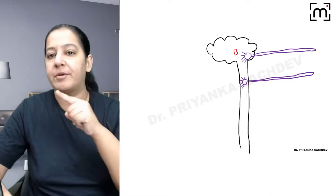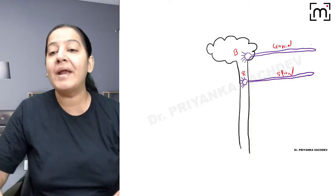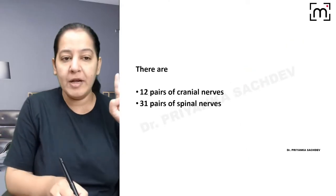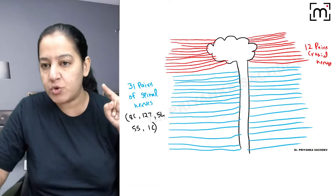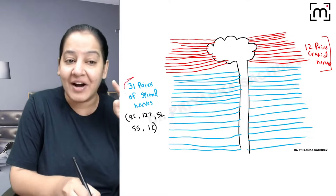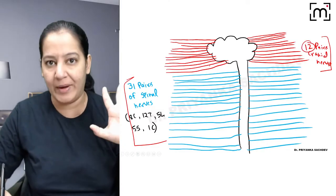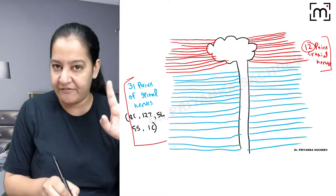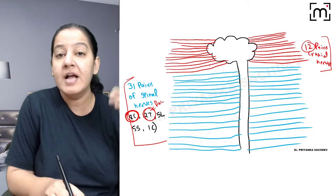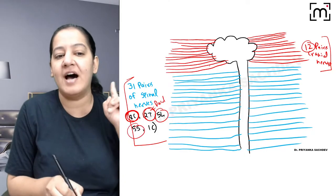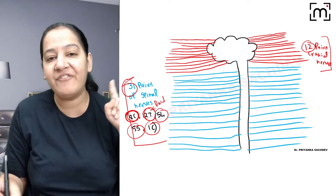Nerves coming out of the brain are known as cranial nerves, and nerves coming out of the spinal cord are known as spinal nerves. A normal human being has 12 pairs of cranial nerves and 31 pairs of spinal nerves. The spinal nerves are divided into five categories: the first 8 are cervical, the next 12 are thoracic (also known as dorsal), the next 5 are lumbar, the next 5 are sacral, and the last one is coccygeal — totaling 31.